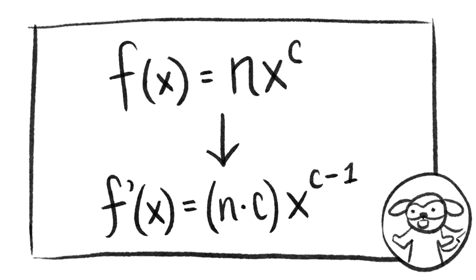For any function with a coefficient n and a variable to the power c, the first derivative will equal the coefficient n multiplied by c. The power of the variable will be subtracted by 1.